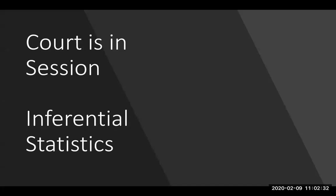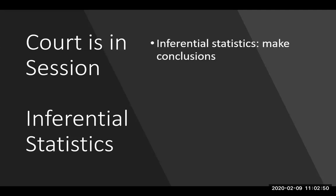We're finally jumping into inferential statistics, which is super cool. We're going to take what we've learned about describing our data, the normal distribution, and probabilities and put them together so we can see what larger conclusions we can make from the studies we've done. Inferential statistics is when we start to make larger conclusions — we take some piece of information and infer what that means to a larger context.